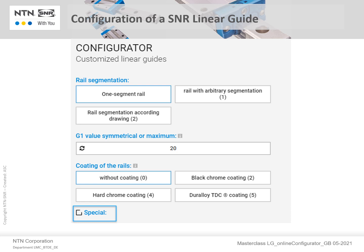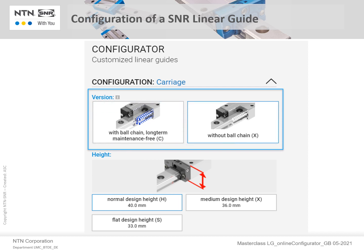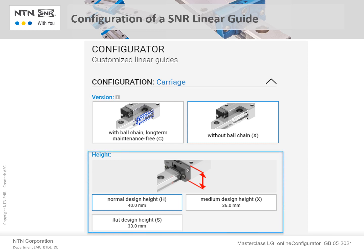Let's now move on to the configuration of the carriage. To begin with, the version of the carriage is specified. In this example, we have selected Type X for the conventional carriage without the ball chain — note the highlighted blue box around our selection. Then one of the available heights can be selected. In the example, the standard normal height, H, will remain.